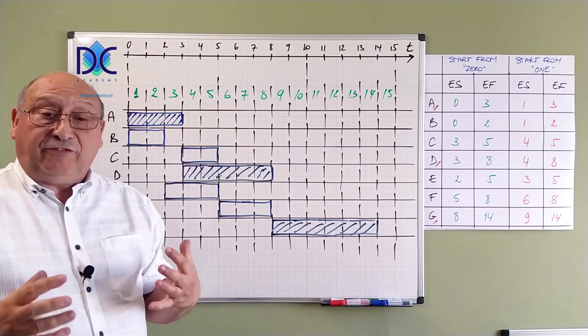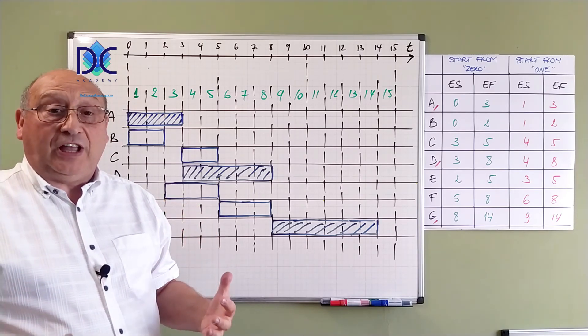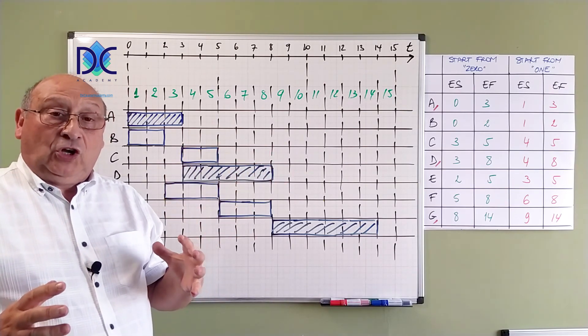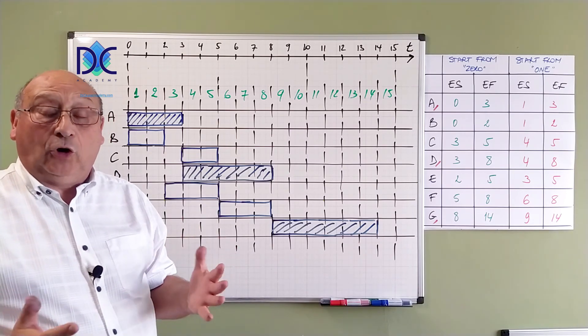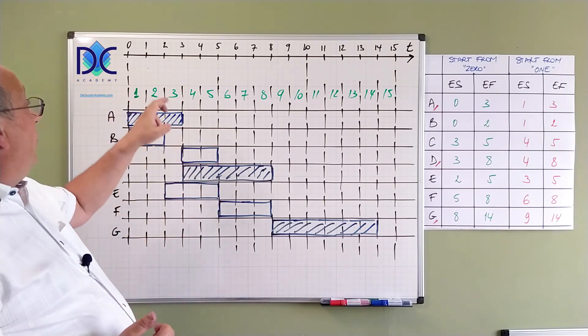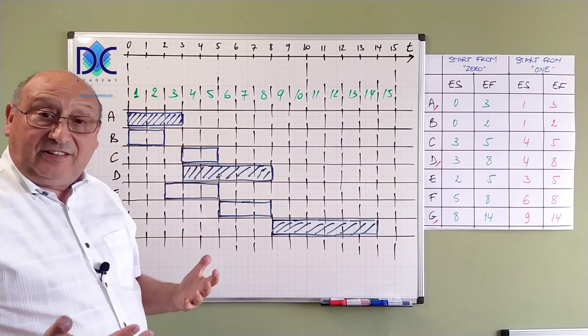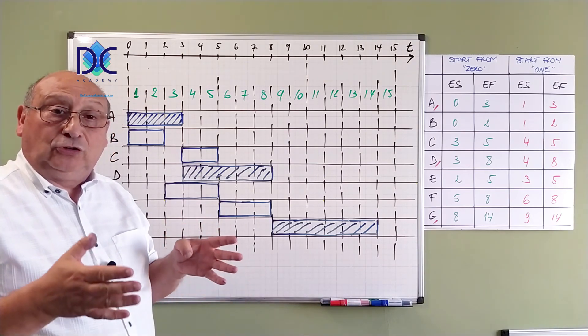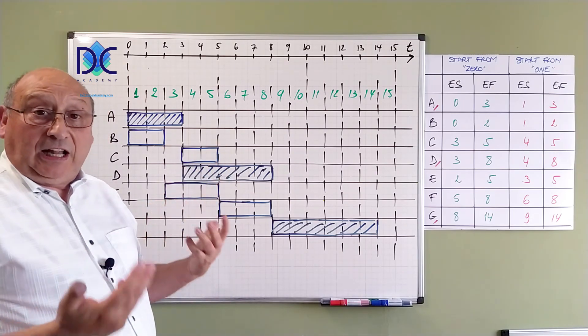Here you see clearly, whatever method I'm using, I'm in fact coming to the same result. The start from 0 is in fact the same calculation method we were using in the activity on the arrow. There we were measuring from events. 0 is the start event for activity A and 3 is the end event. These are milestones related to the activity. And that's why we use this calculation method.